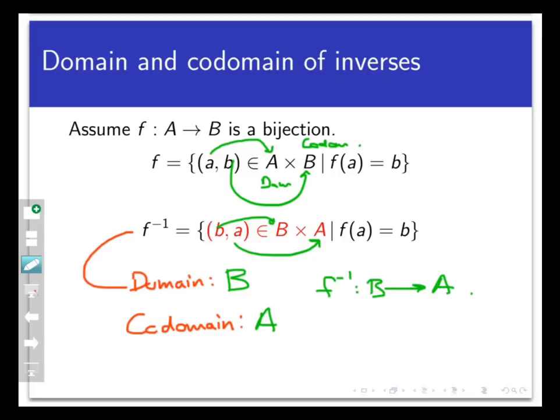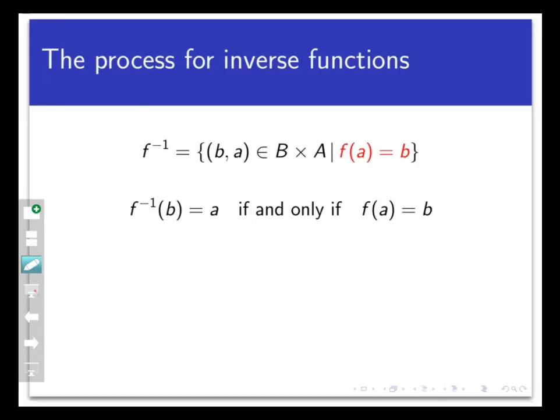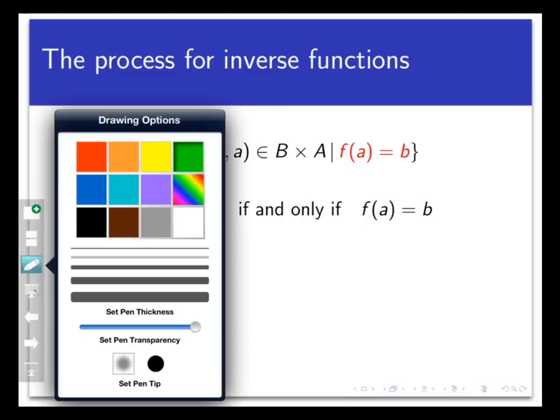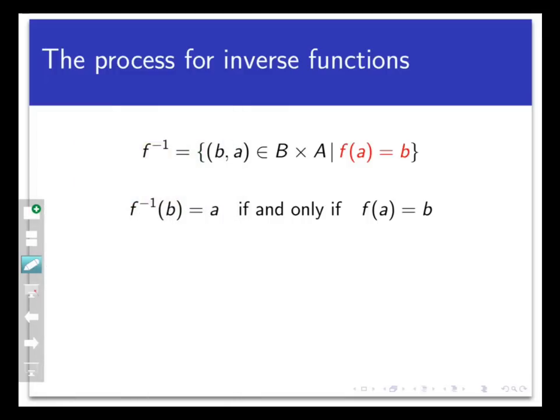Let's think about how the process for f inverse works. We define f inverse formally to be the set of all ordered pairs (b,a) in B cross A such that f of a equals b. What does this mean? If f inverse is a function from B to A, then what is f inverse of b for a point b in the set B? The definition tells us that f inverse of b equals a if and only if f of a equals b.